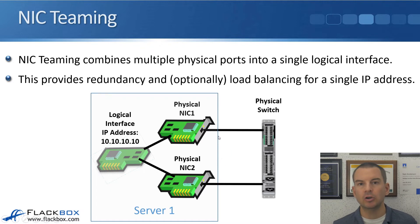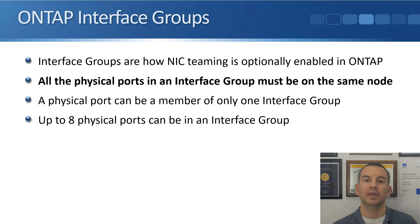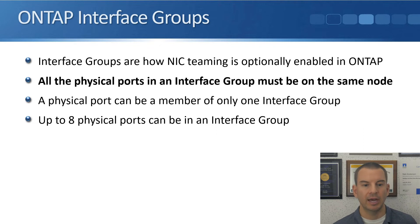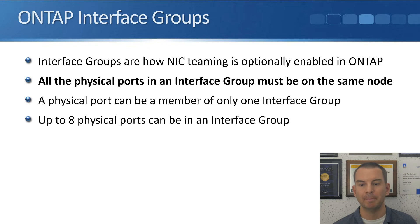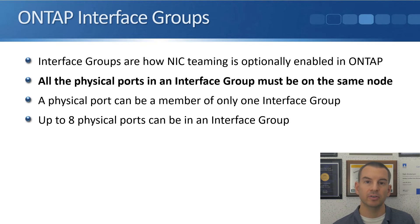NIC teaming is a really common thing on standard servers. We can do the same in ONTAP, where we bundle multiple physical interfaces into a single logical interface using interface groups. The number one thing to remember is that all ports in an interface group must be on the same node. So ports E0C and E0D on node 1 could go into one interface group, and E0C and E0D on node 2 into another.